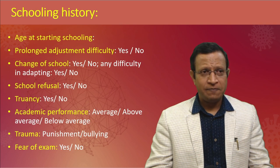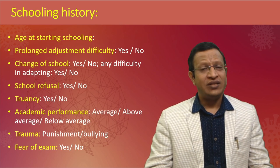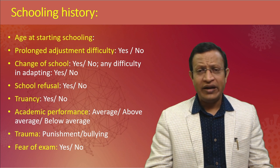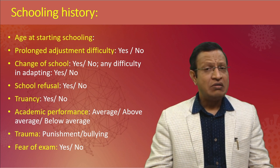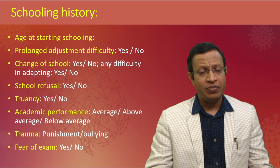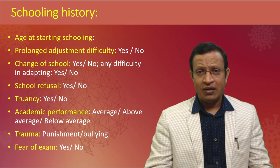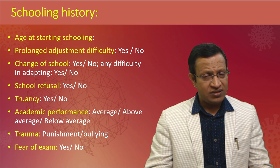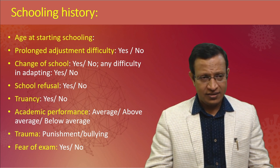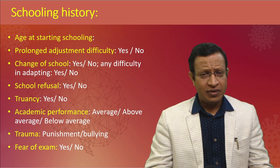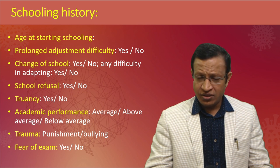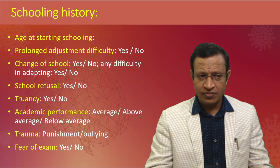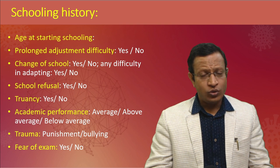For schooling history: at what age did schooling start, was there any difficulty in adjustment or school refusal, any change of school and how the child adapted, and if parents shifted due to transfers, how the child adapted to the new situation. Ask about truancy, academic performance — whether increasing, decreasing, or static — any trauma, how the family dealt with the child, punishment by teachers, bullying by peers, and any fear of exams.